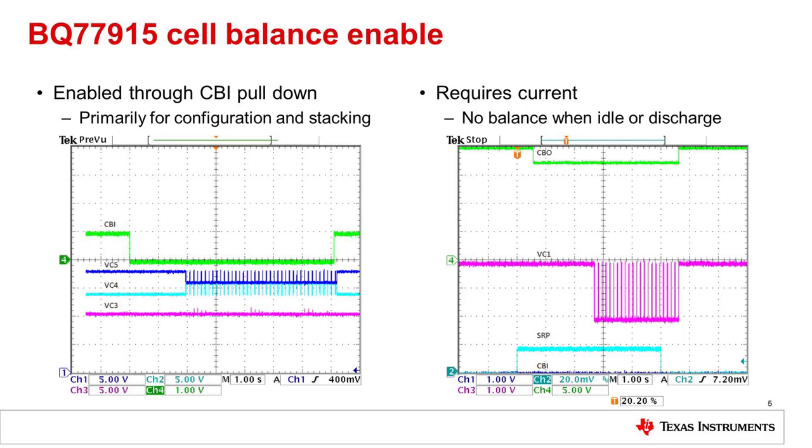Cell balancing requires current. The state comparator must detect current flow before balancing will be enabled. Current flow is indicated to an upper device through the CBO pin when balancing is enabled.